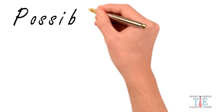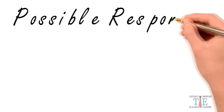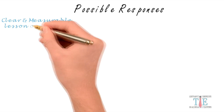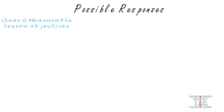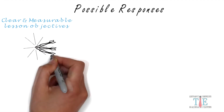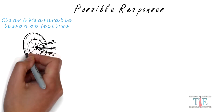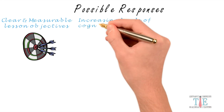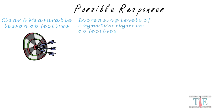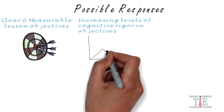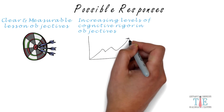There are many acceptable answers to this question, but here are just a couple of responses. The first thing you want to look for is clear and measurable lesson objectives. Student objectives should be aligned to standards and measurable in terms of student success. Secondly, I would look for increasing levels of cognitive rigor. For student success, teachers must plan for activities and assessments with higher order thinking skills.